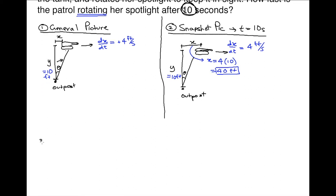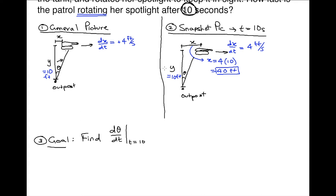So the next thing we want to do is list out our goal — what quantity do we want to solve for? Our goal is to find dθ/dt. We want to find how fast this angle is turning at the specific instant t equals 10. That's what we're looking for.